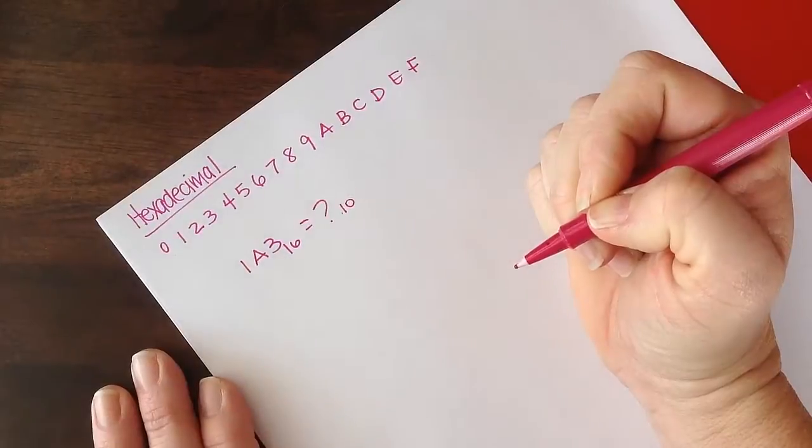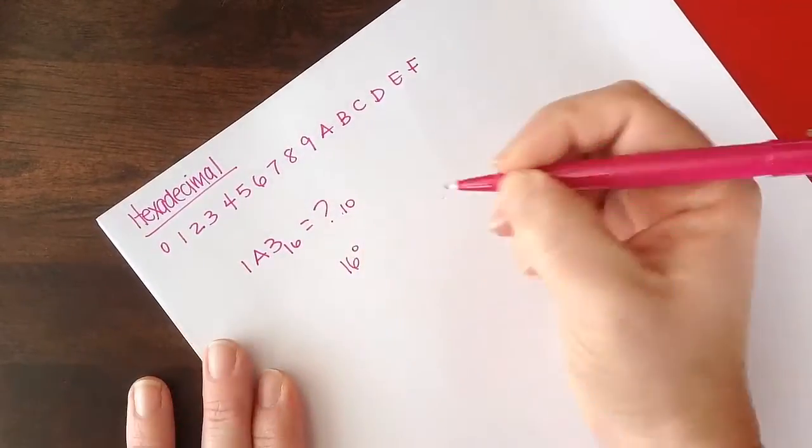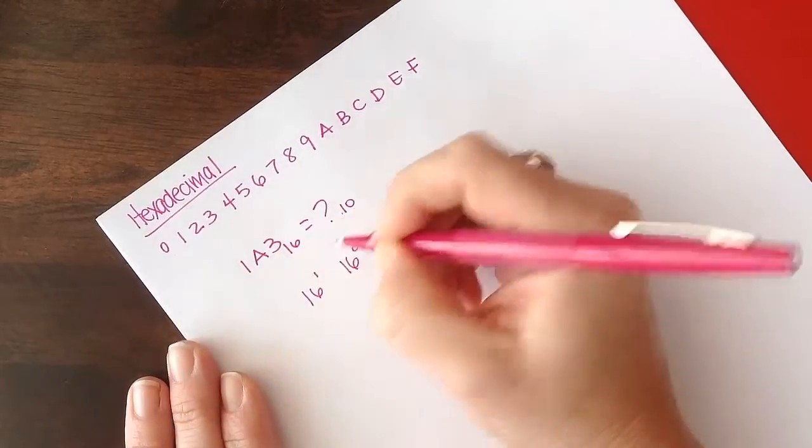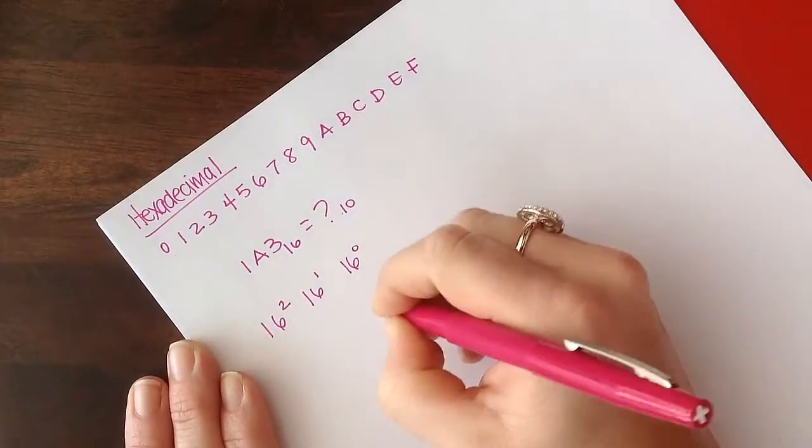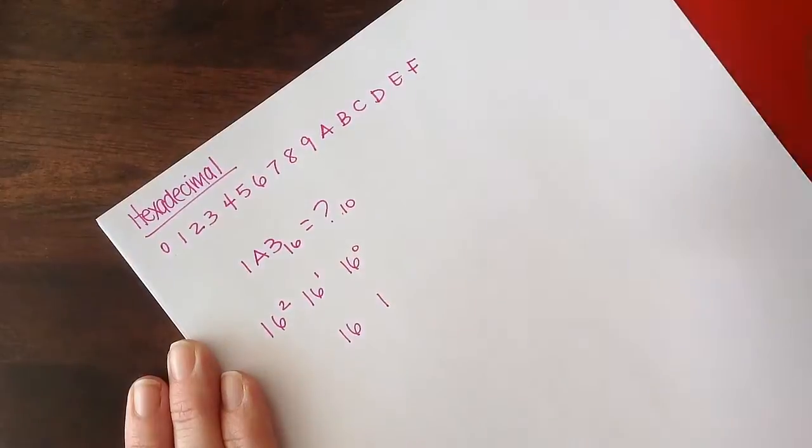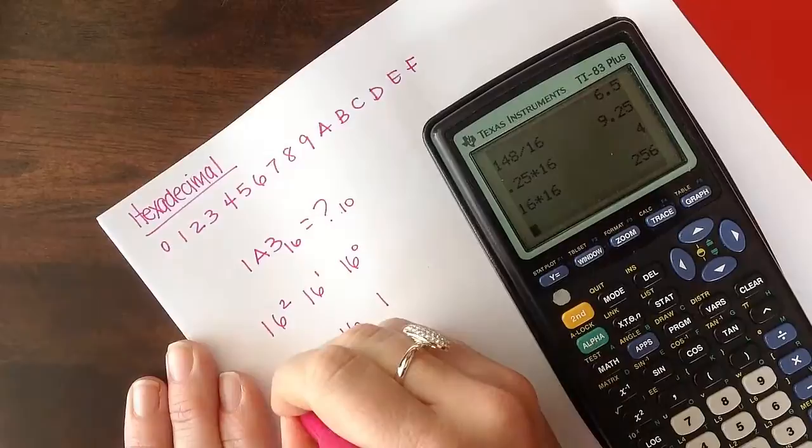Again, we're going to use the weighted multiplication technique. The first place is 16 to the 0, then 16 to the 1, then 16 squared. So this will be 1's place, this will be 16's place, and then 16 squared is 256.